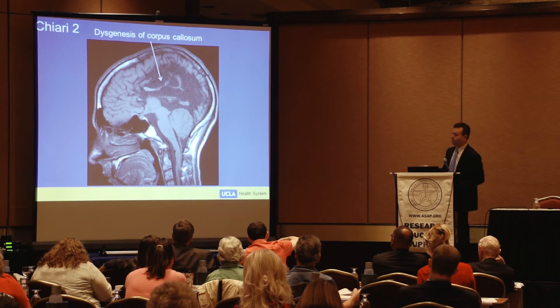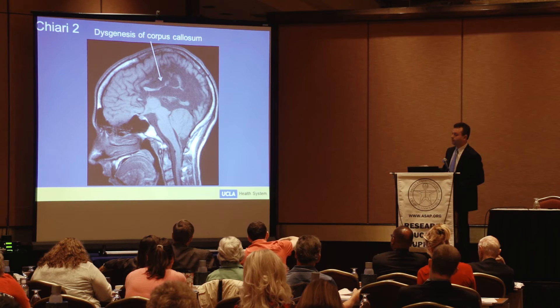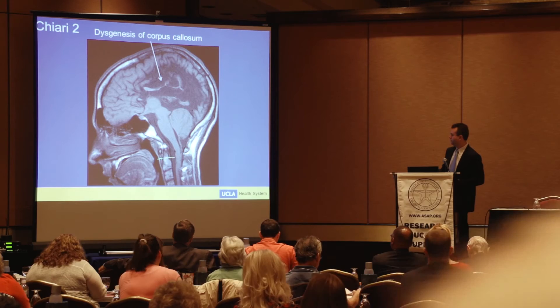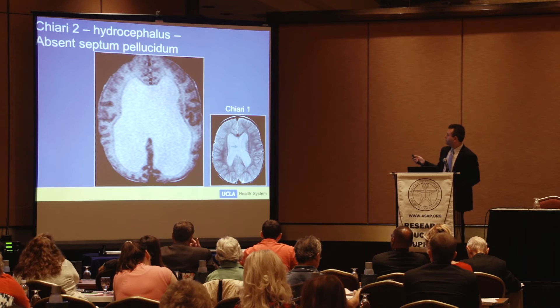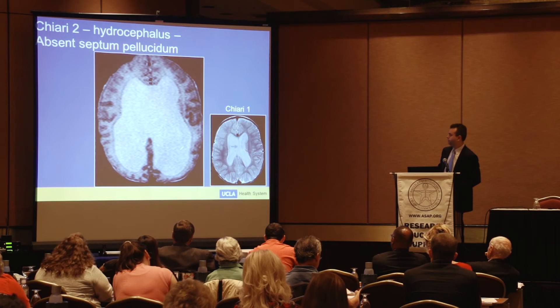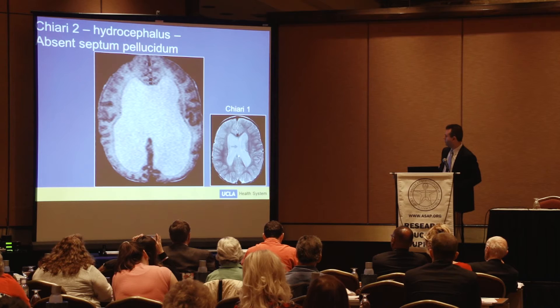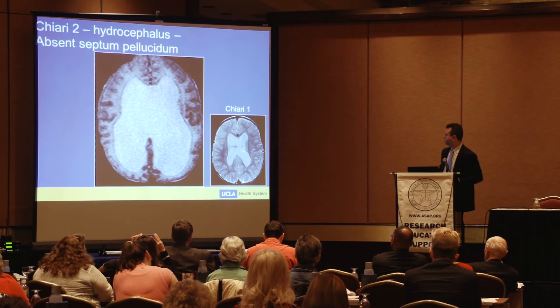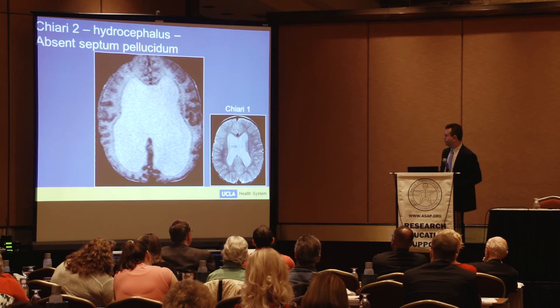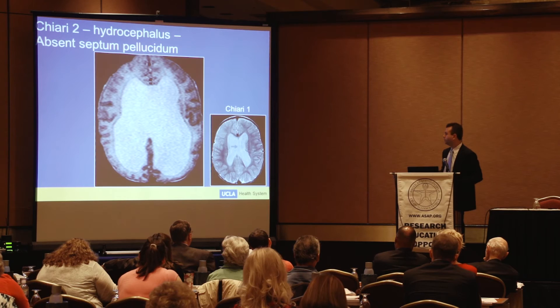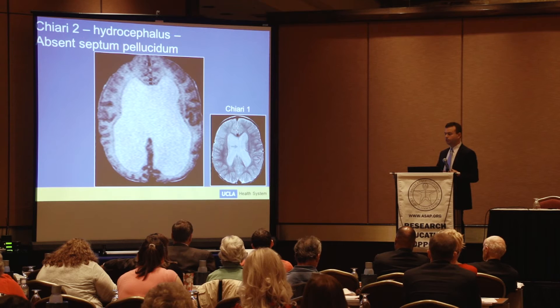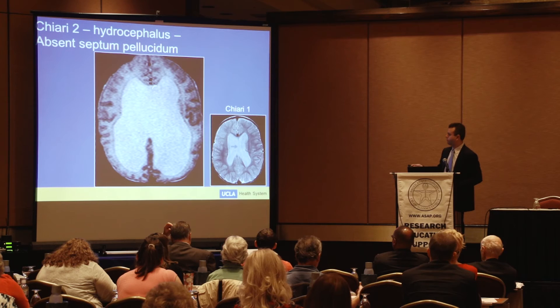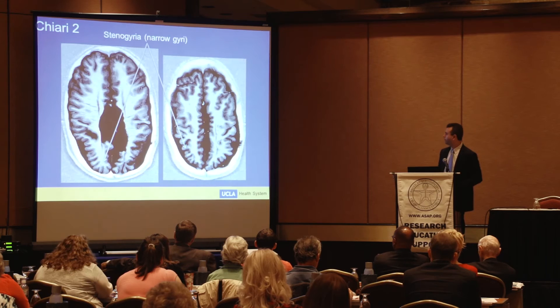Agenesis of the corpus callosum is one of the most common malformations seen across many syndromes, and we see it in both Chiari 1 and Chiari 2. Here again we see agenesis of the corpus callosum alongside a beaked tectum. Comparing hydrocephalus in Chiari 1 versus Chiari 2: in Chiari 1 you can see the septum pellucidum — the dividing septum between the lateral ventricles — and the hydrocephalus results from obstruction. In Chiari 2, it's a much more involved disease of neurulation, and you actually lose developmental structures like the septum pellucidum, so it's not just regular obstructive hydrocephalus.